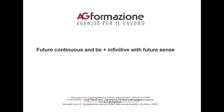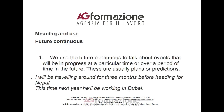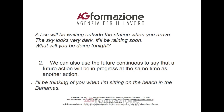Future continuous: meaning and use. We use the future continuous to talk about events that will be in progress at a particular time or over a period of time in the future. These are usually plans or predictions. For example: I will be traveling around for three months before heading for Nepal. A taxi will be waiting outside the station when you arrive. The sky looks very dark — it'll be raining soon. What will you be doing tonight? We can also use the future continuous to say that a future action will be in progress at the same time as another action.